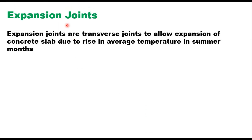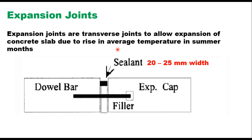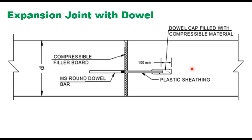The next type is expansion joints. Expansion joints are transverse joints that allow expansion of the concrete slab due to a rise in average temperature during summer months. These are full depth joints and they prevent any tendency towards distortion, buckling, blow-up or spalling. Here a full depth joint is shown between two slabs, with a dowel provided between them for transfer of load. The width is 20 to 25 millimeters, and a joint filler board of compressible material as per IRC 15 is used to fill the gap between the two slabs.